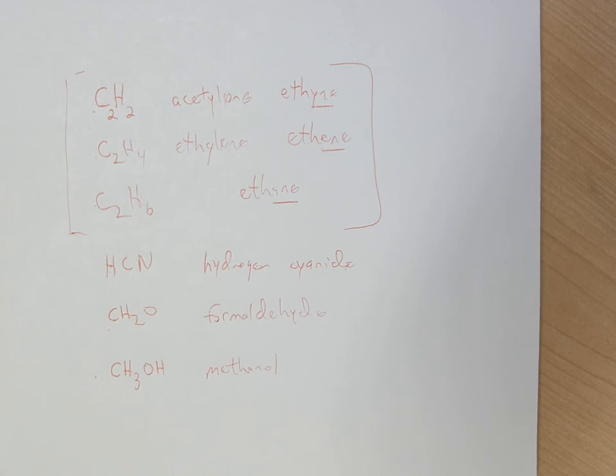so this would be good practice to try to draw Lewis dot structures for each of these molecules, then to look at VSEPR to see what the electron domain geometry and shape is about the central atom,